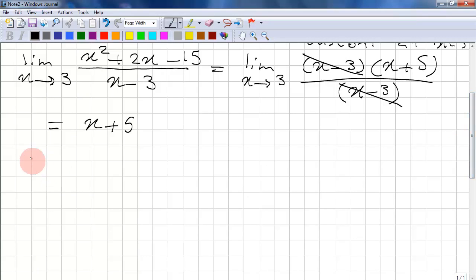So now the limit of the function as x approaches 3 of x plus the limit as x approaches 3 of 5 equals 3 plus 5, which equals 8.